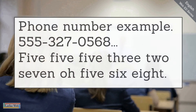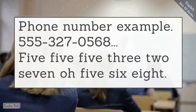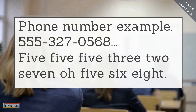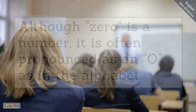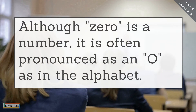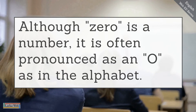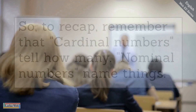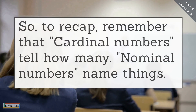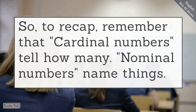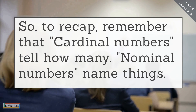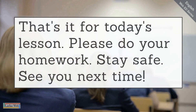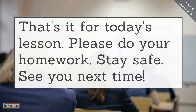Here is a phone number example: five, five, five, five-three-two, seven, oh, five, six, eight. Although zero is a number, it's often pronounced as an 'O' — as in the alphabet — when we refer to numbers. So to recap: remember that cardinal numbers tell how many; nominal numbers name things. That's it for today's lesson. Please do your homework, stay safe, and see you next time. Class dismissed.